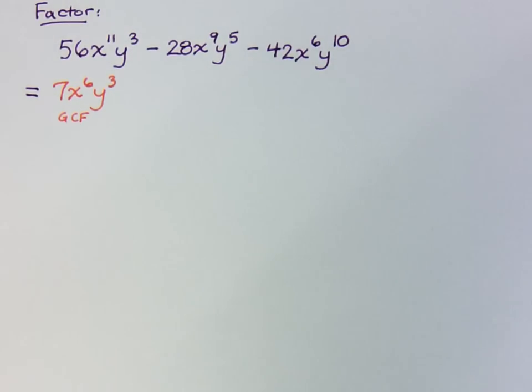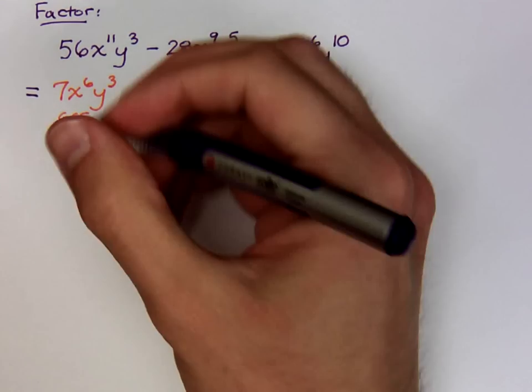Now what about your y's? These guys all have y, and the smallest amount is y to the third that we see here in this first term. So this is going to be our GCF, our greatest common factor. Always look for that first. It doesn't matter what you do. The first thing you do when you factor, you've got to factor out the greatest common factor. So always look for that.